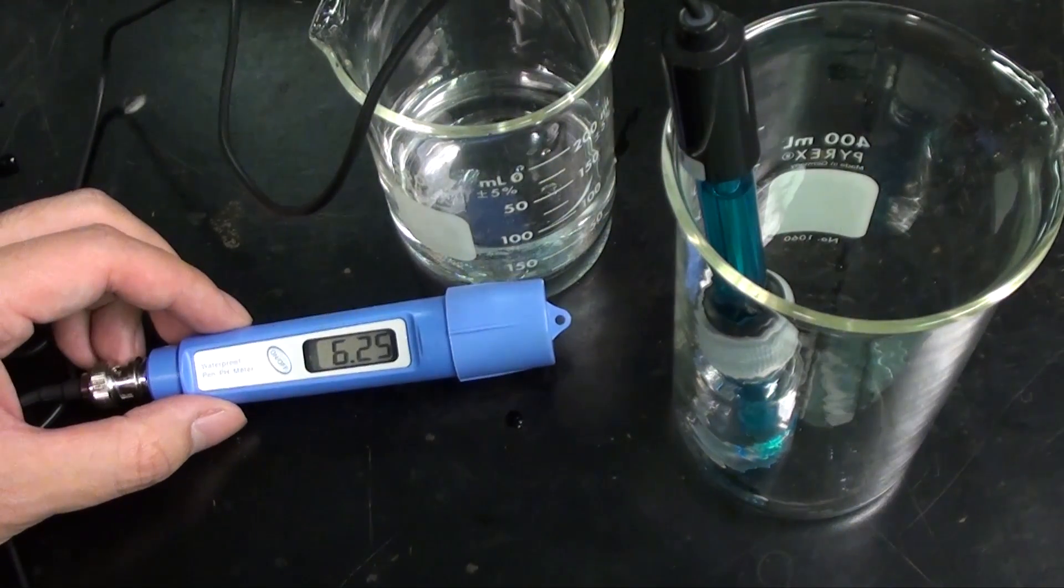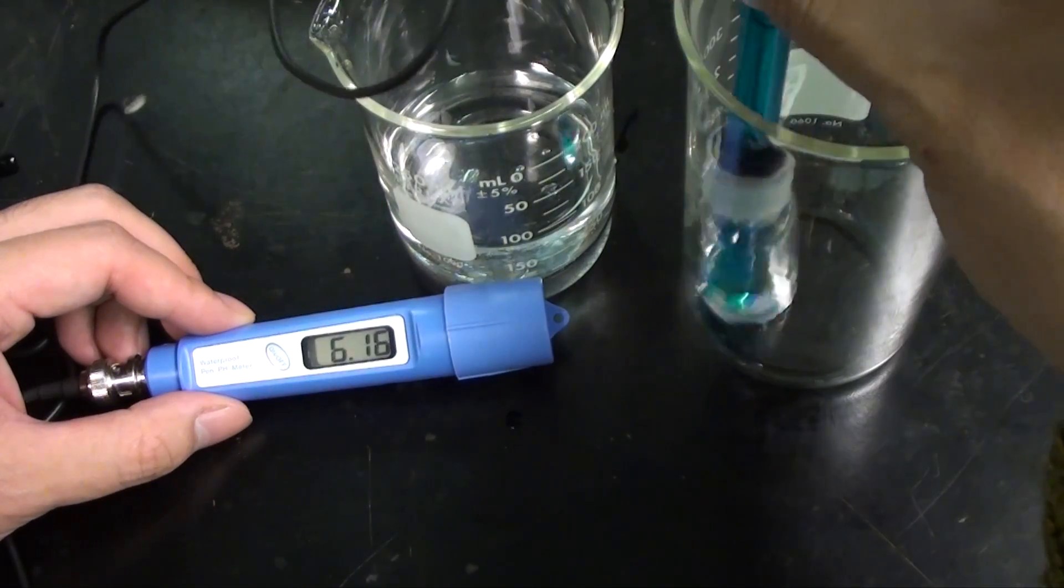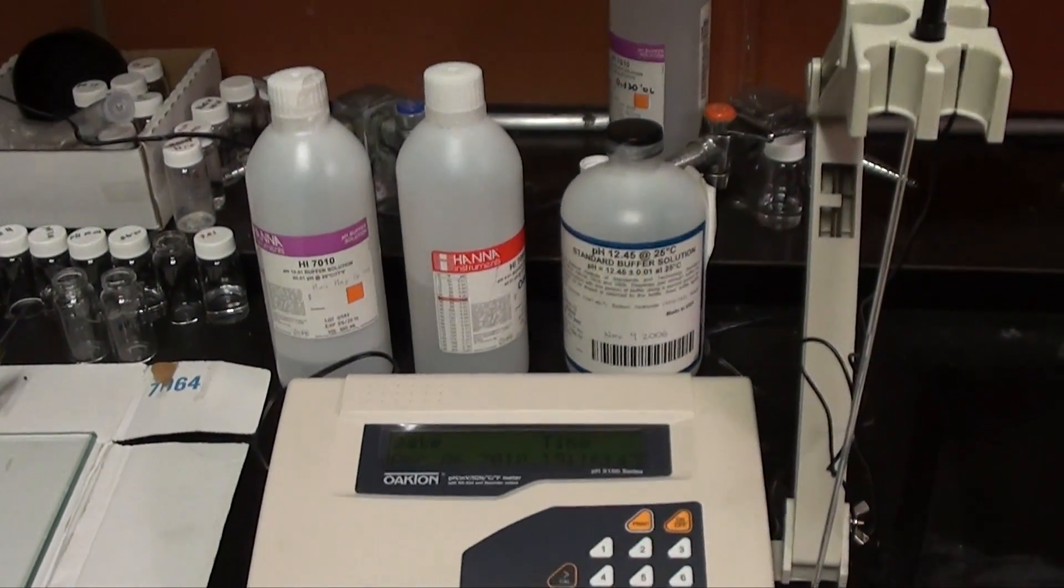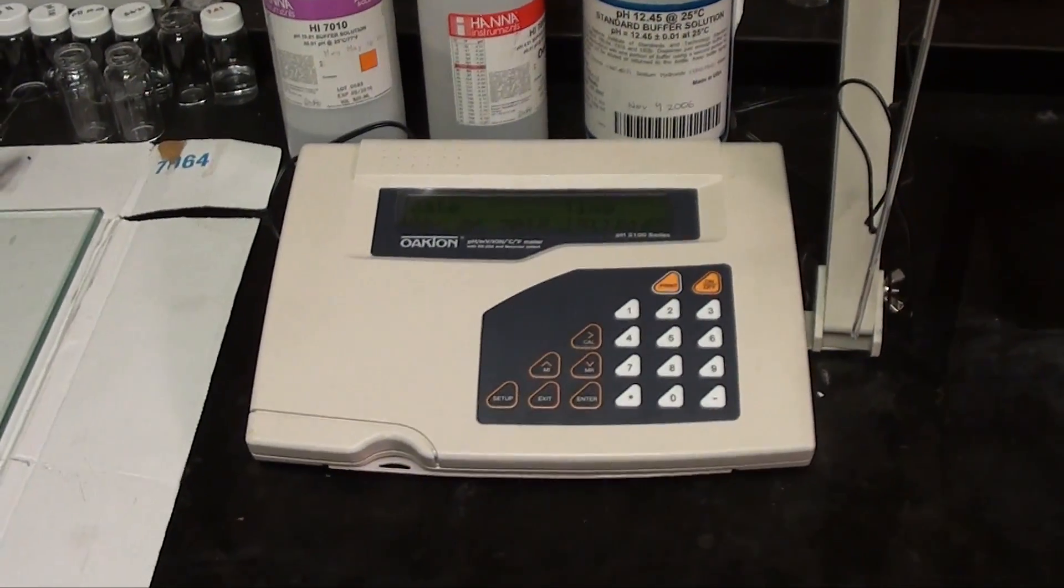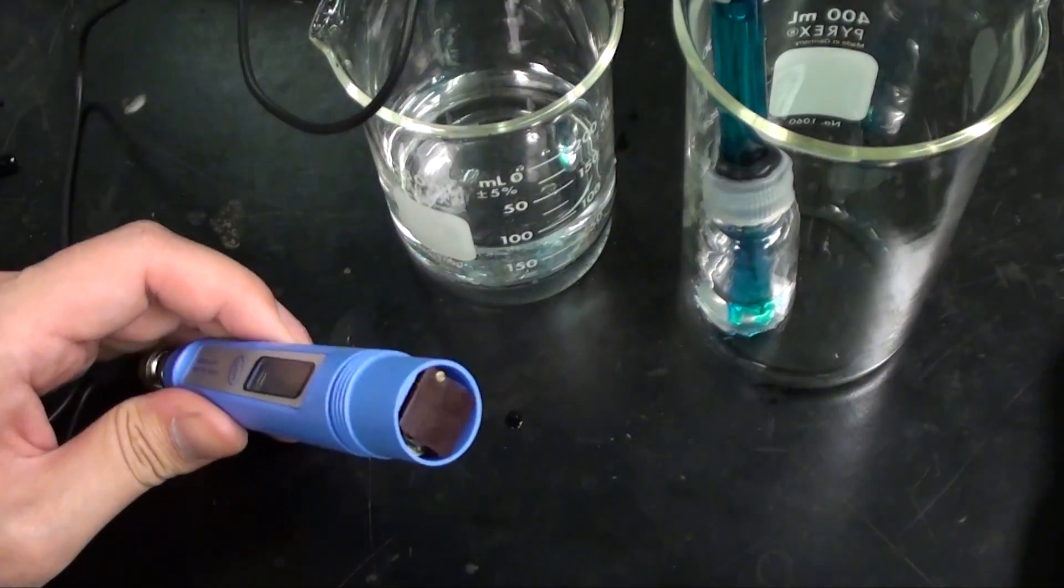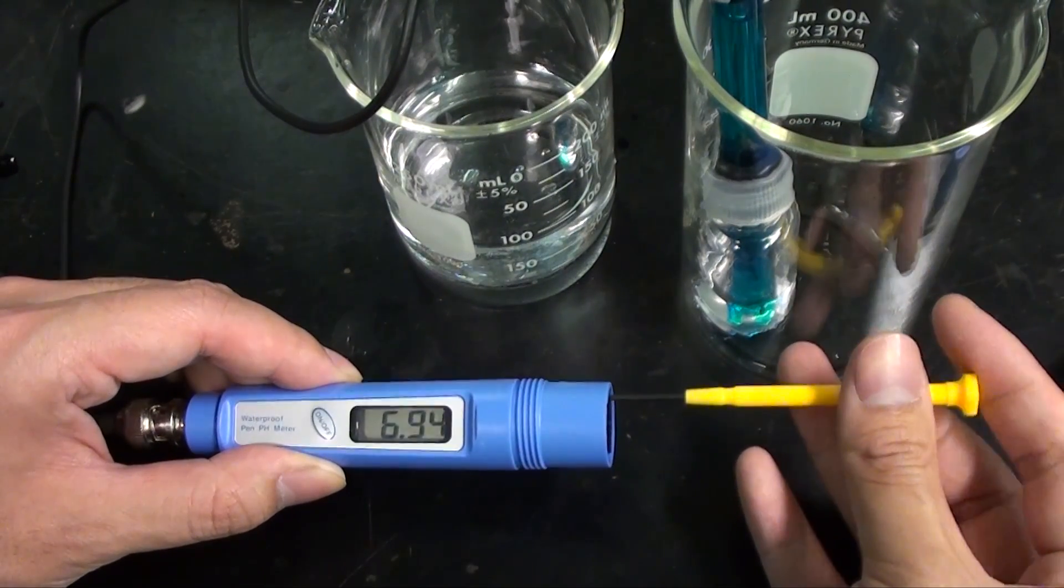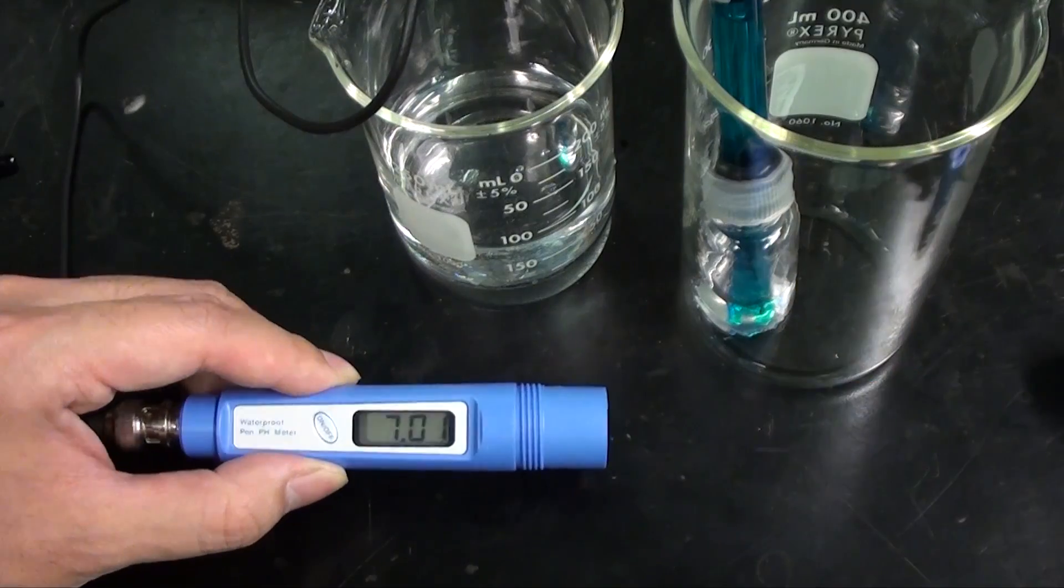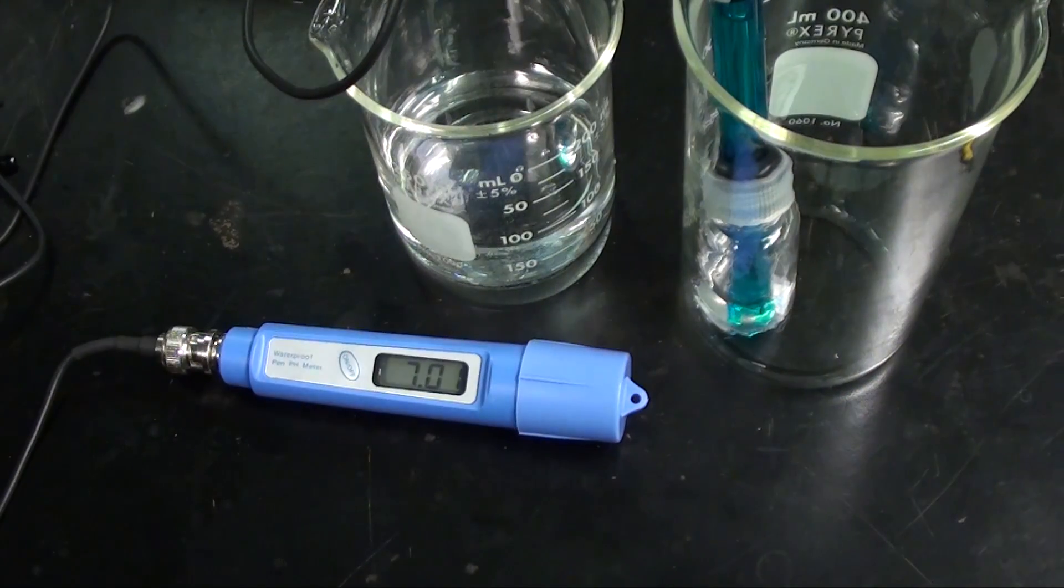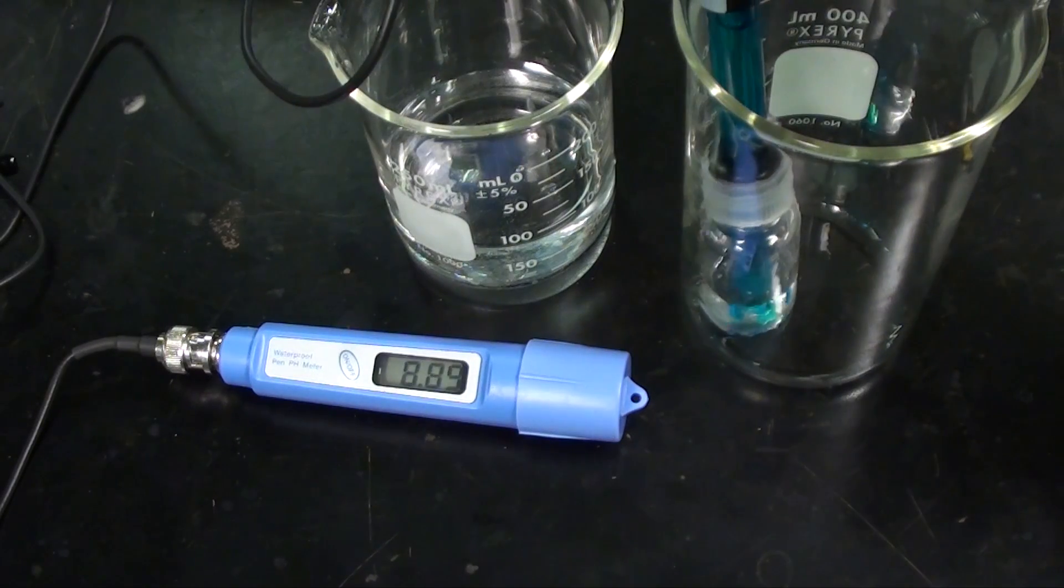As you can see the electrode has drifted quite a bit since its last use, so we need to reset it. On an expensive meter we can just press in the right commands. On the smaller ones there is usually an adjustment screw or similar that we can use. Let me adjust this one here. There we go. We've now calibrated this pH point to its proper reading.